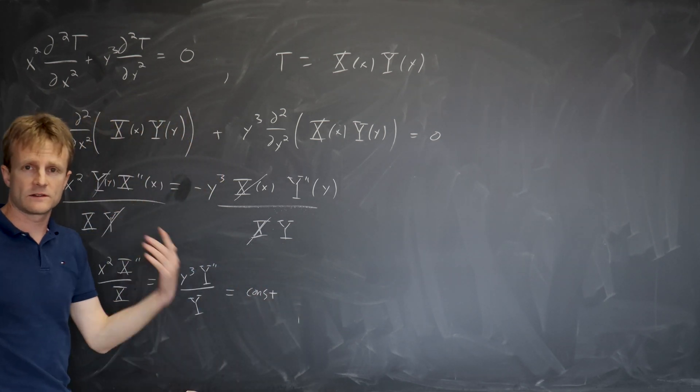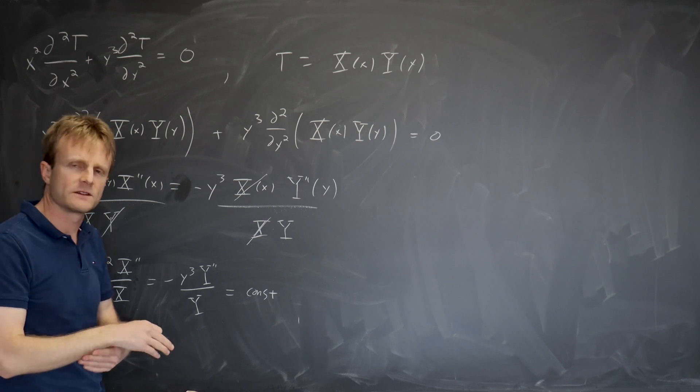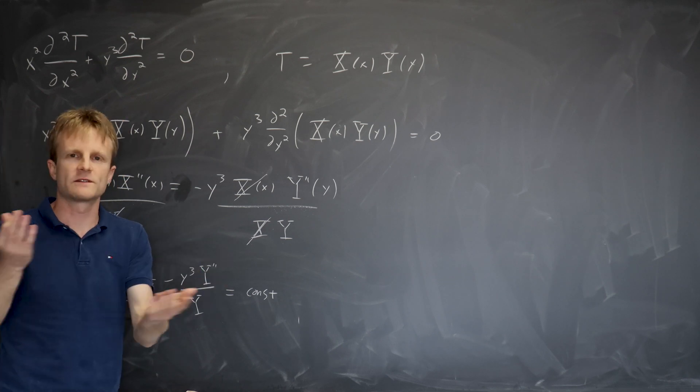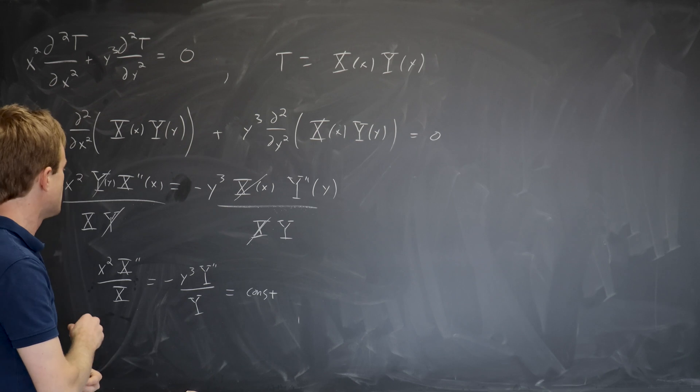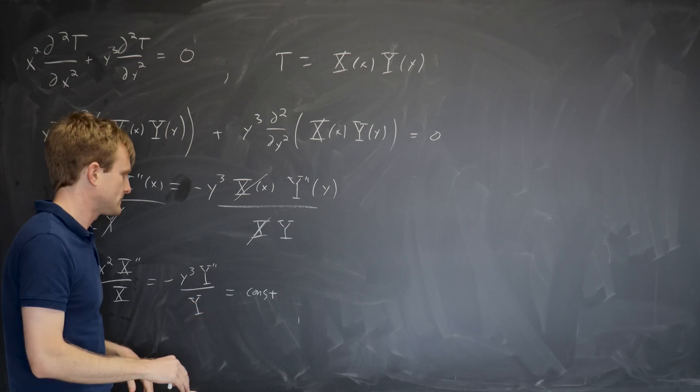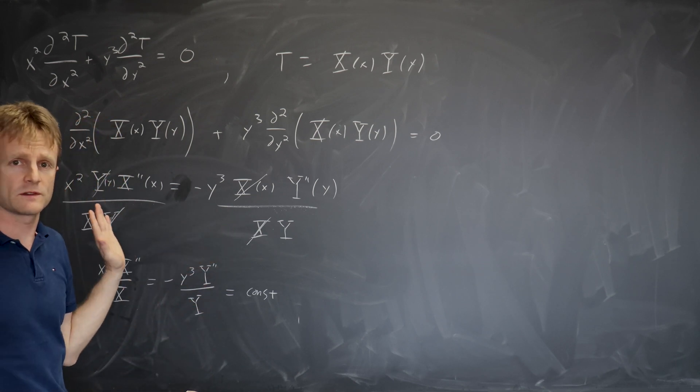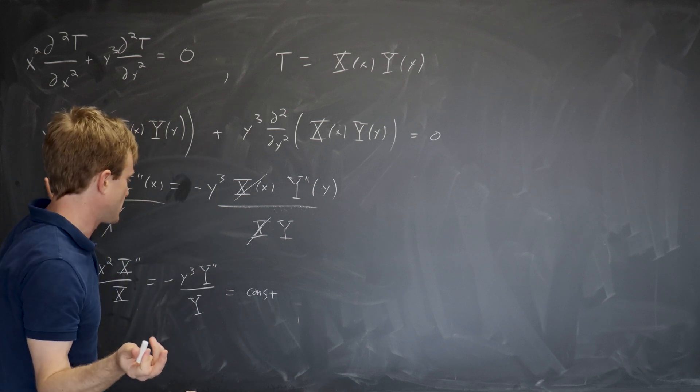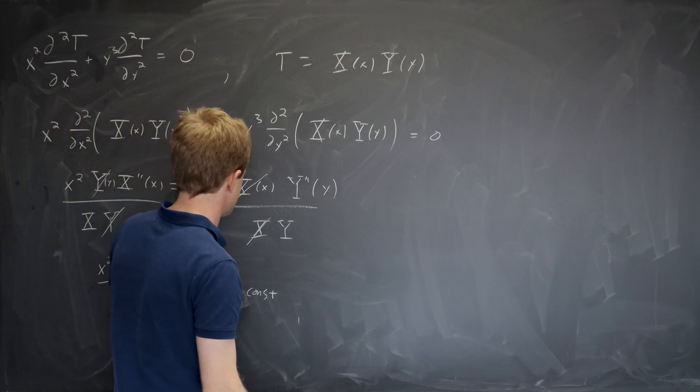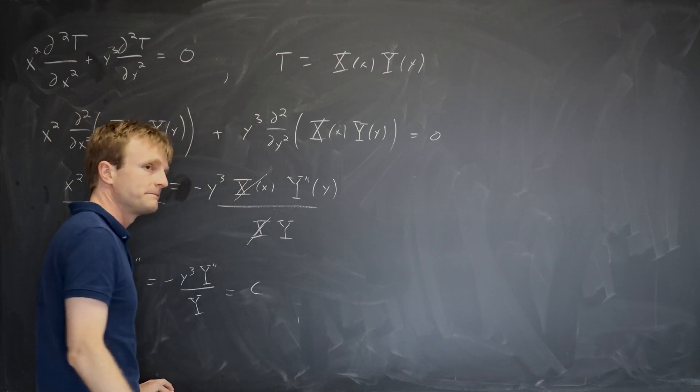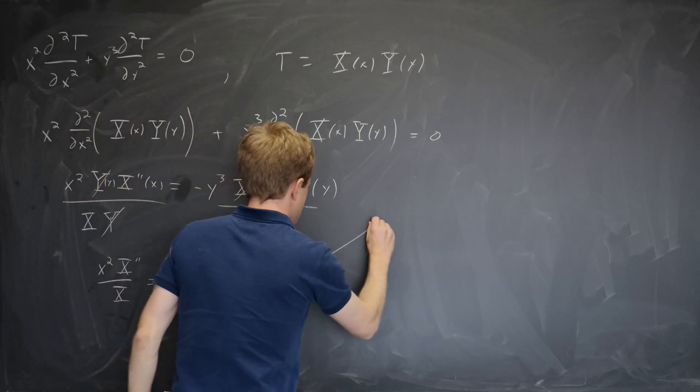And you have to give the constant a name. In the examples, I picked the name minus k squared because I knew that was going to turn out nicely, but it doesn't always. And since I'm not doing any particular physics problem here, no particular reason to call it anything. So I'll just call it c.